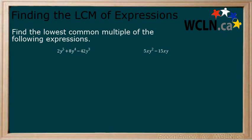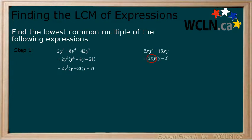Find the lowest common multiple of the following expressions. First, factor each expression. There is a common factor of 2y-cubed that can be factored out. Then the trinomial can be factored to get (y-3) and (y-7) for a fully factored expression. For the next expression, we factor out a common factor of 5xy.